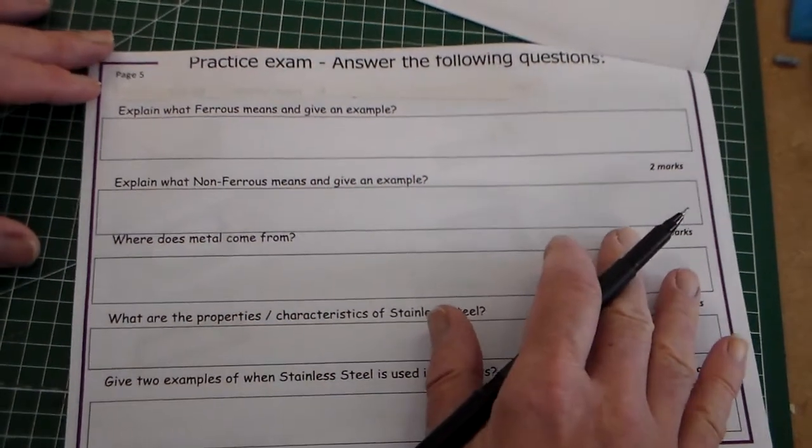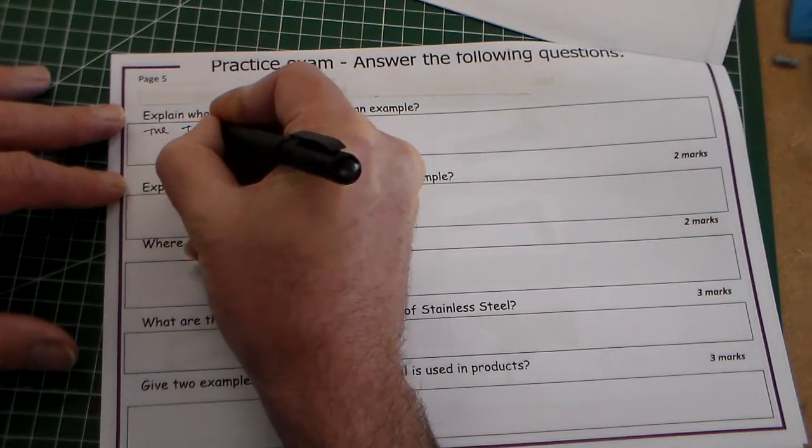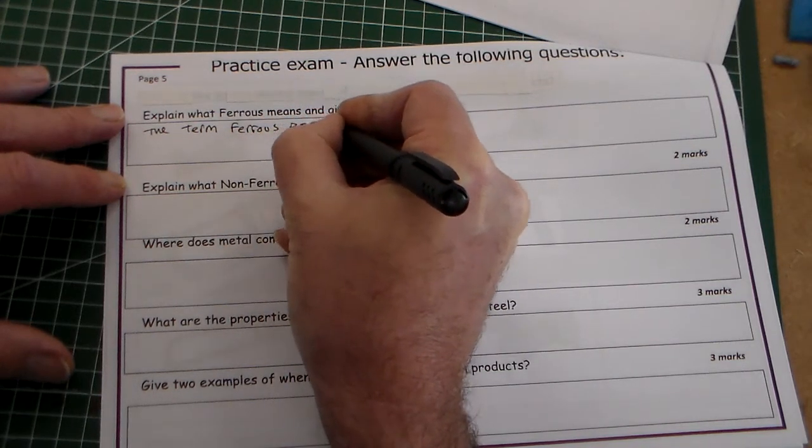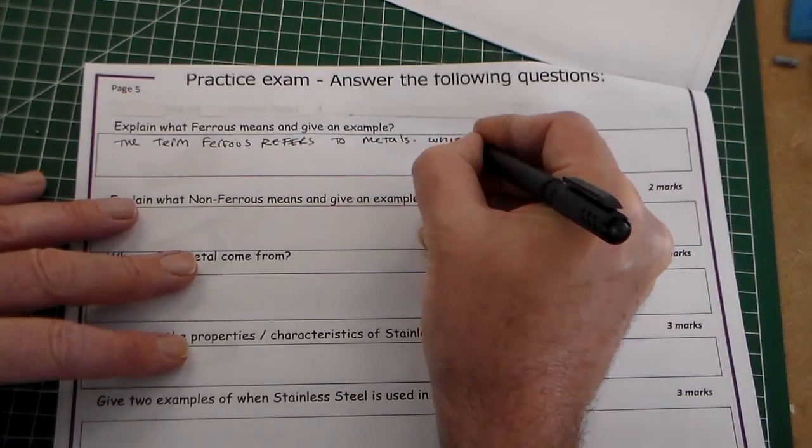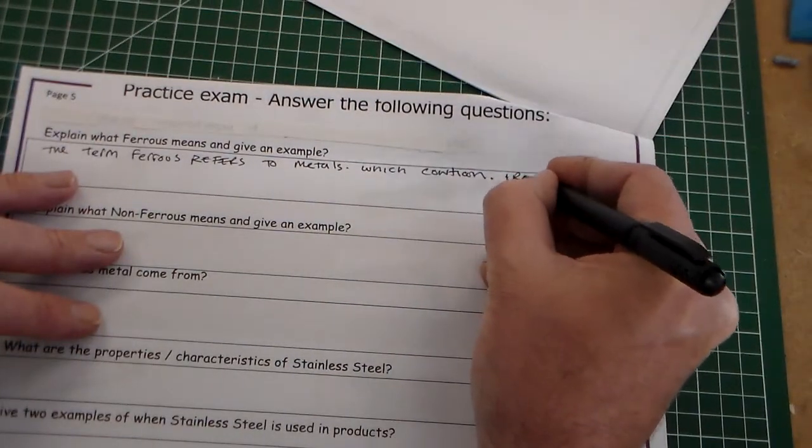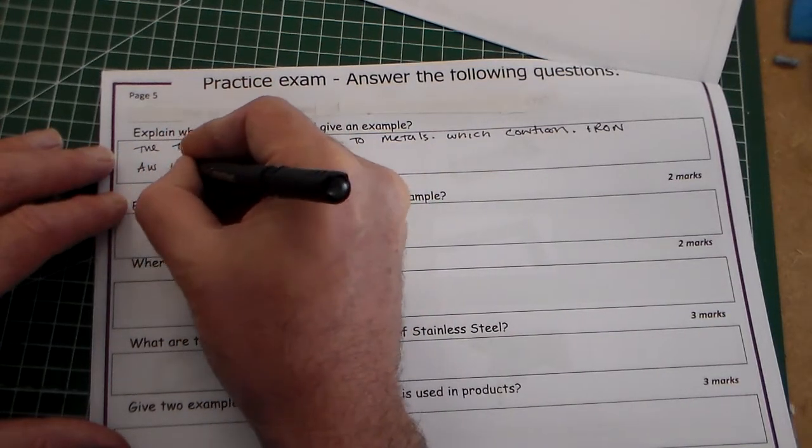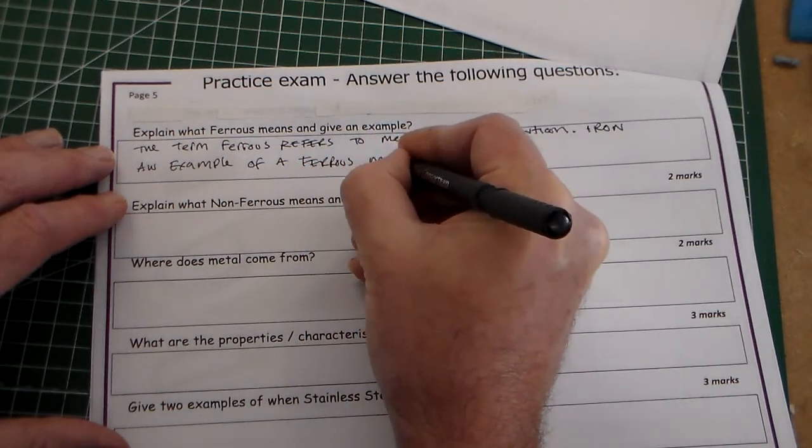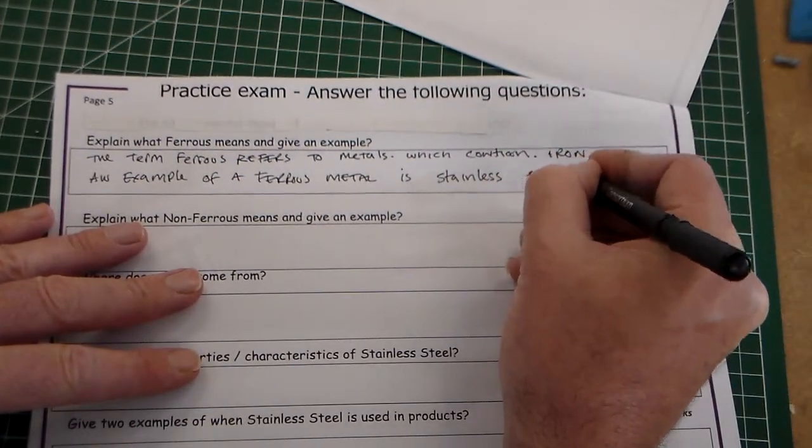First question: explain what ferrous means and give an example. So we need to describe ferrous. We can say the term ferrous refers to metals which contain iron. Basically, any metal that contains iron is a ferrous metal. An example of a ferrous metal is stainless steel.